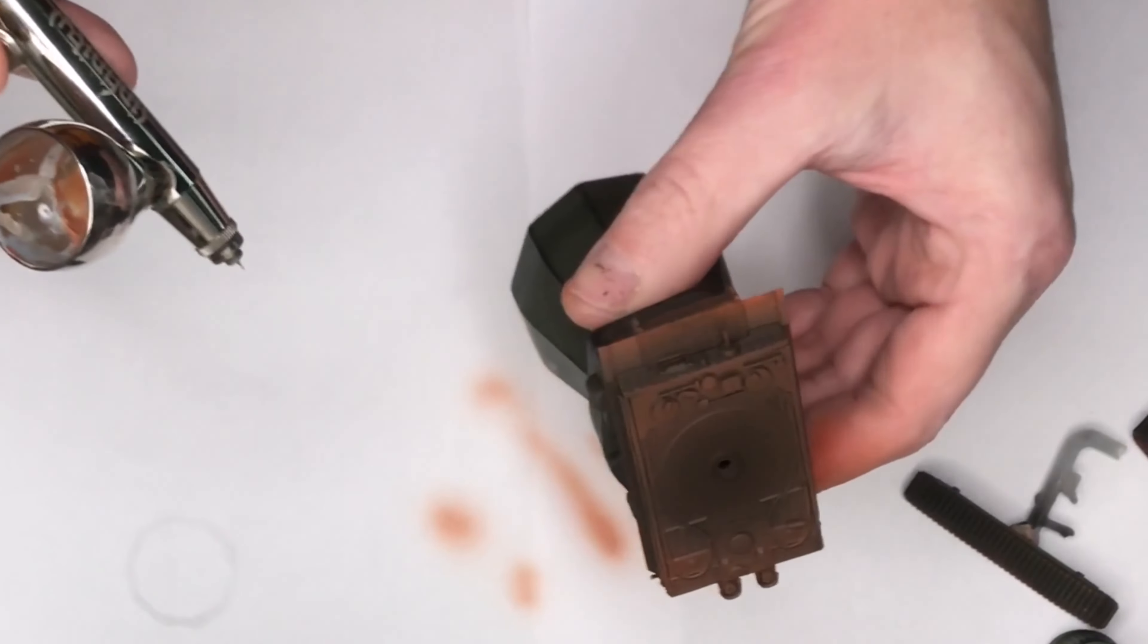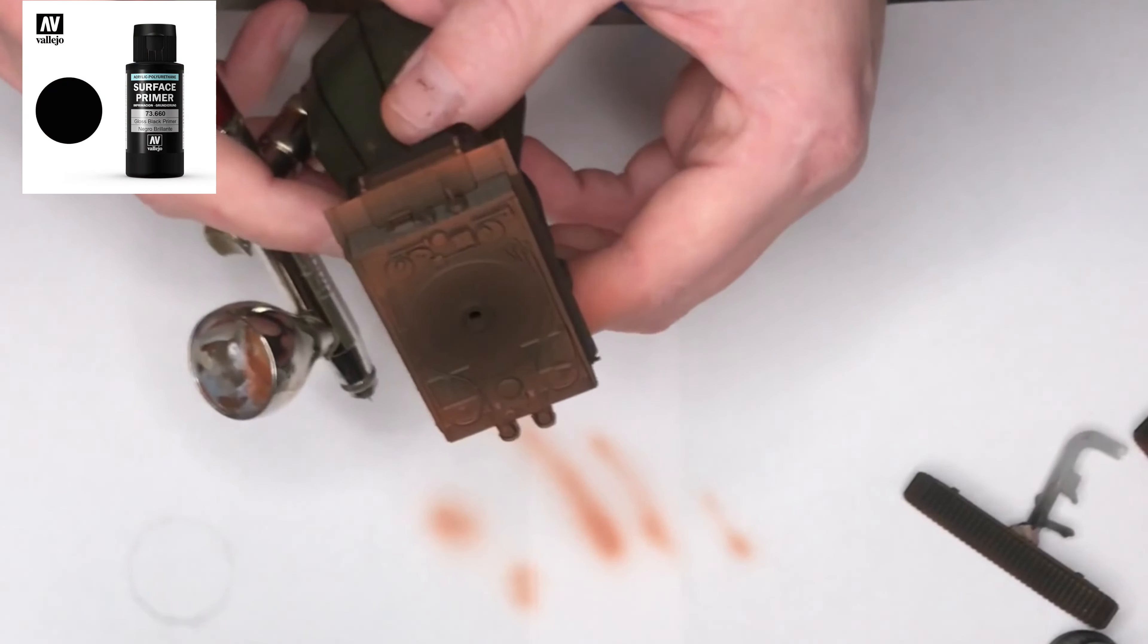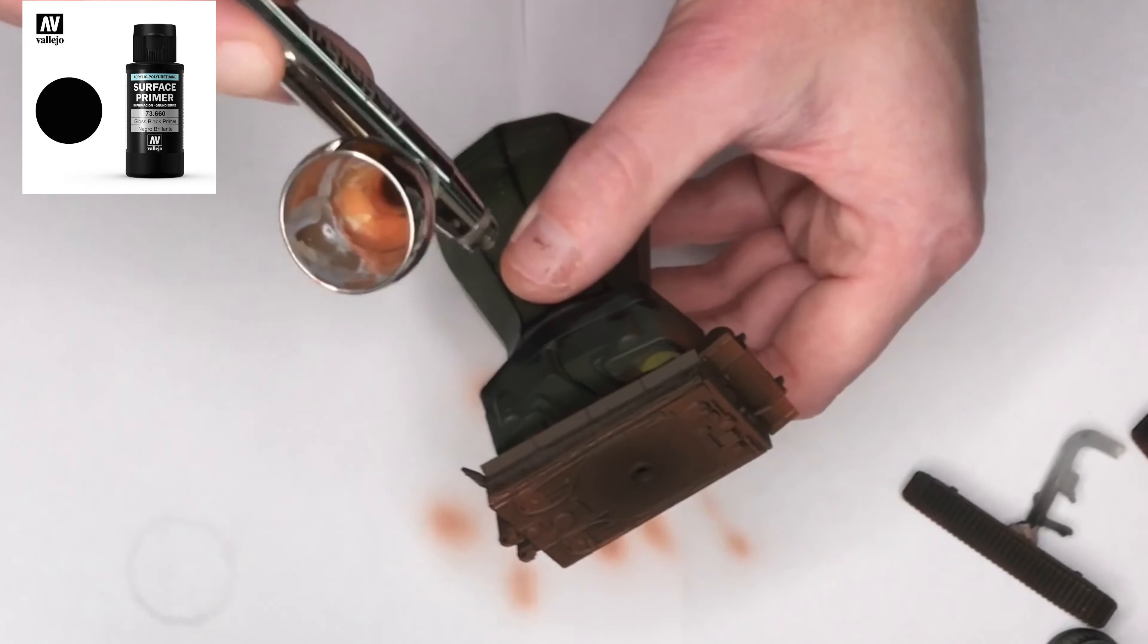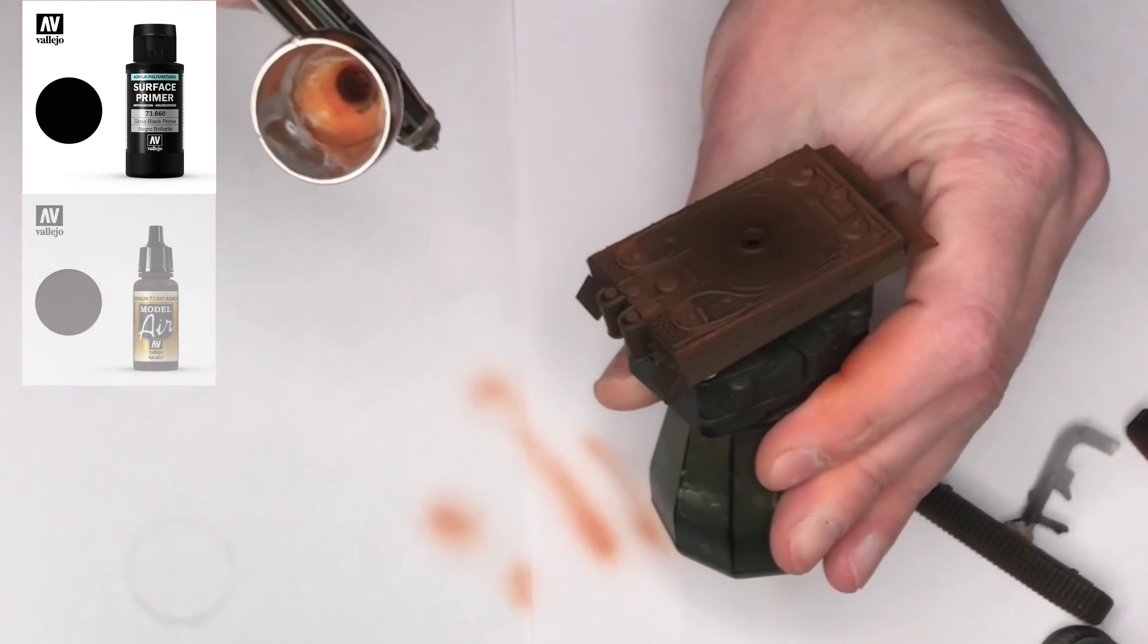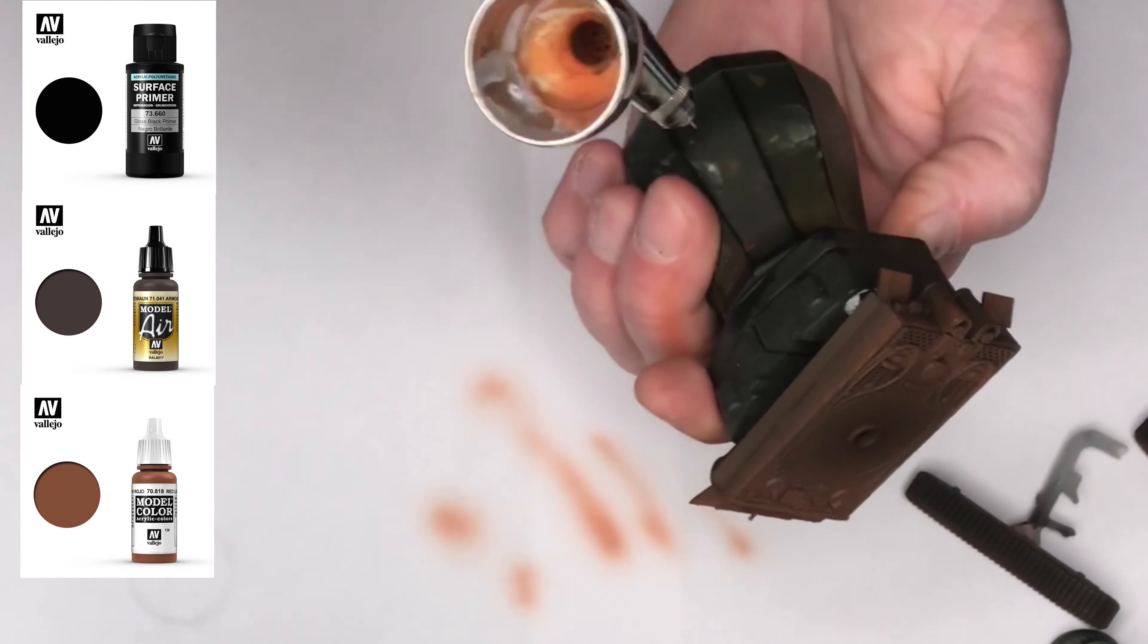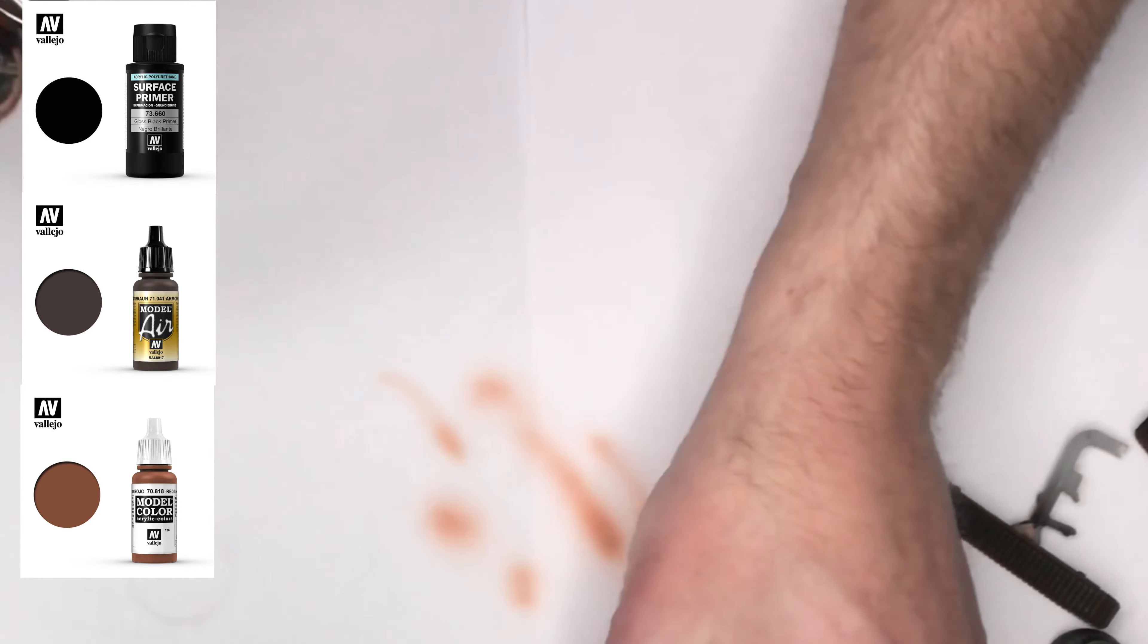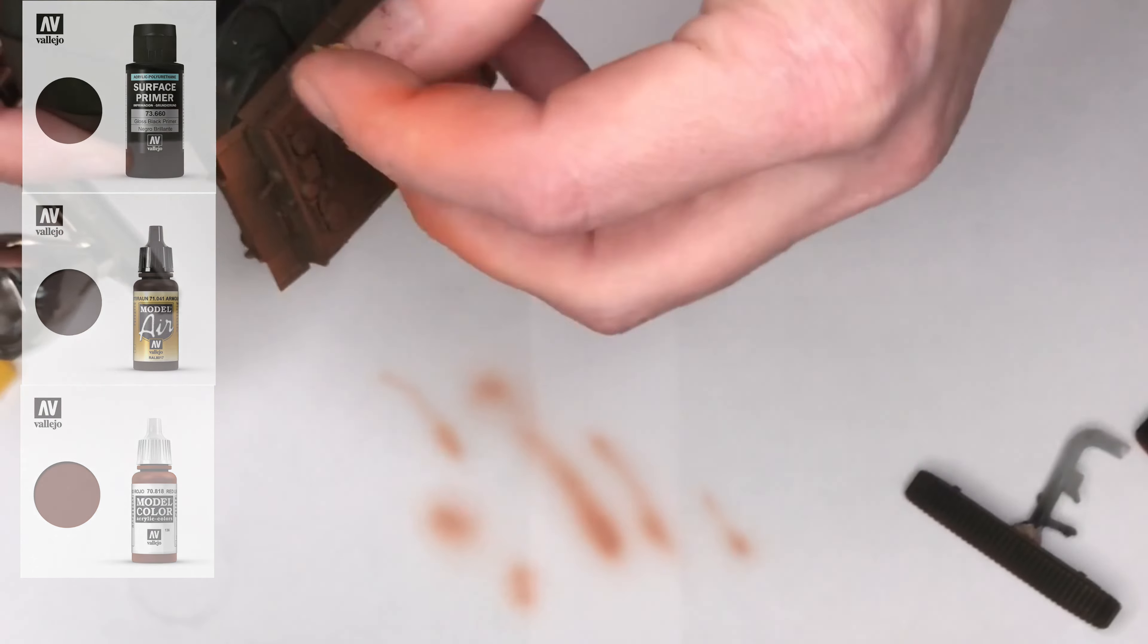I'm actually, as you can see, already working on it. The model has been painted black as a base coat and then tank brown. What you can see me doing right now is I'm using red leather to build the highlights on all the edges. And that's a very fun process of working with the model and turning it around and putting all the light paint on all the edges. Very fun.